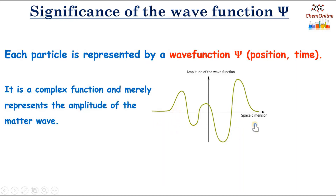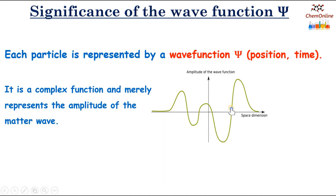Here you can see the graphical representation of an electron wave, and ψ merely represents the amplitude — that is, the distance from the resting position to the peak position. So that is denoted by ψ, which is the amplitude function.